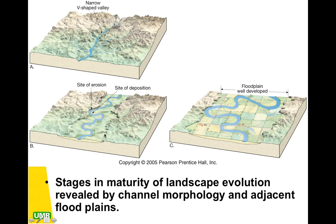The river deposits whatever particles it's carrying — sand, gravel, silt, clay. So we have erosion and deposition happening in a relatively old river, and the flood plain is widened out considerably. In a very old river, we're going to see much larger meanders, a much larger flood plain, and some well-developed marsh areas as well.